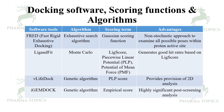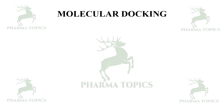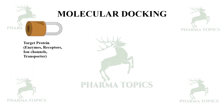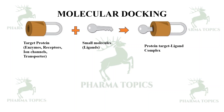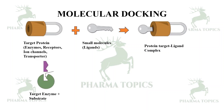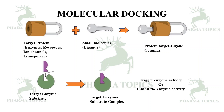To summarize molecular docking: whether the target proteins are enzymes, receptors, ion channels, or transporters, you can imagine it as a lock and you search for a key, which is the small molecule. You bind these and study the protein-target ligand complex. If the protein is a target enzyme, the key is a substrate — when it binds, it creates a target enzyme-substrate complex where it may trigger or inhibit the enzyme activity. That is the outline of molecular docking. I hope it will be useful for you.